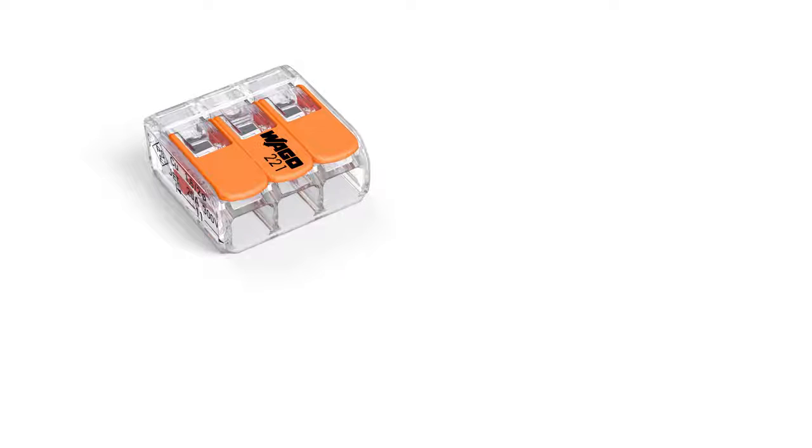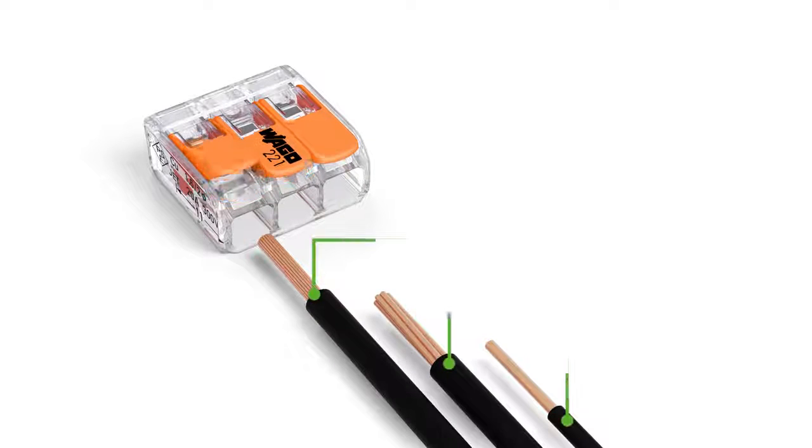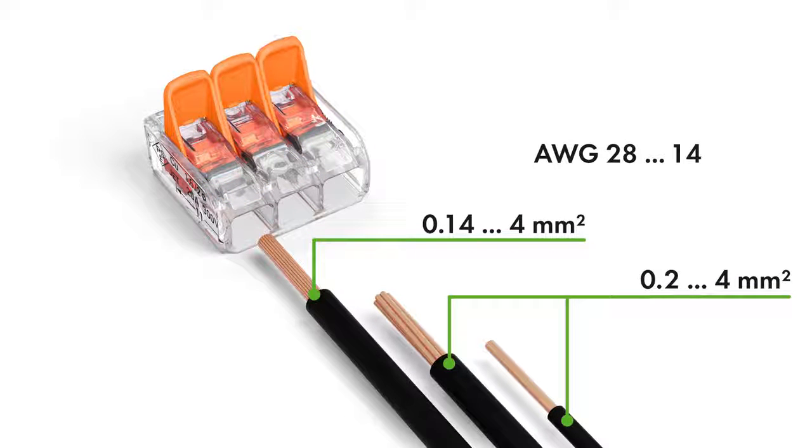The compact splicing connectors for all conductor types feature a large connection range: 0.14 to 4 square millimeters fine-stranded and 0.2 to 4 square millimeters solid and stranded, 28 to 14 AWG.